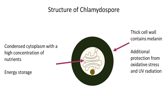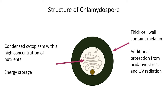The cell wall of chlamydospores very often contains melanin, which provides additional protection from oxidative stress and UV radiation. The cytoplasm is rich in nutrients, serving as a food reserve for the fungus.